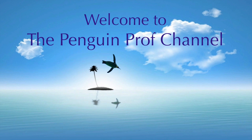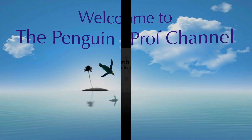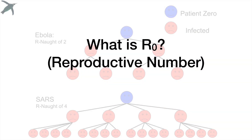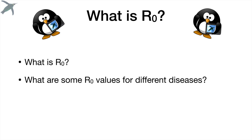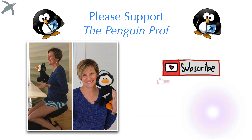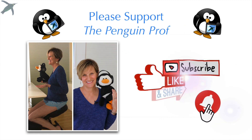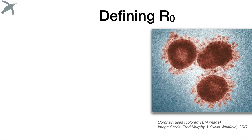Hello and welcome to the Penguin Prof Channel. In today's episode we're talking about R-naught, the reproductive number — what is it, what are some values of R-naught for different diseases, and what factors influence what those values actually are? Before we get into it, I'm going to ask for your support. Please go down there and click some of those buttons to help support the Penguin Prof Channel.